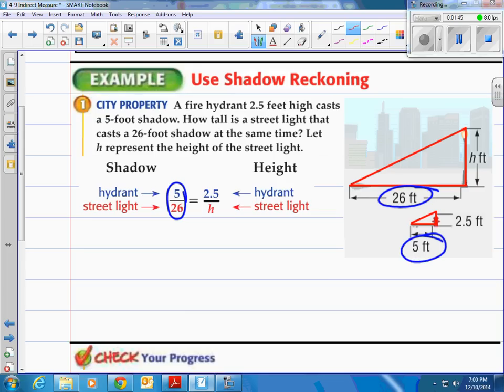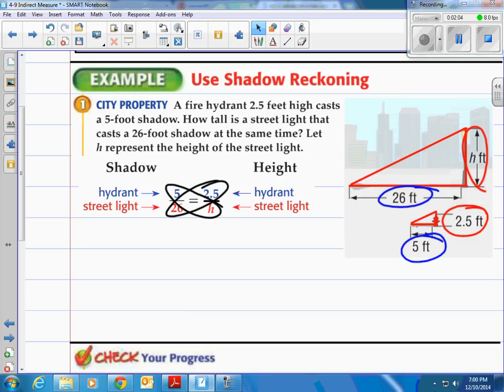Then of course we're going to take the 2.5-foot height of the hydrant and match it up with the height of the lamp. That's our other ratio. Once you have that set up, you remember what to do. All we have to do now is cross multiply and solve. Because you know that the cross products are equal.